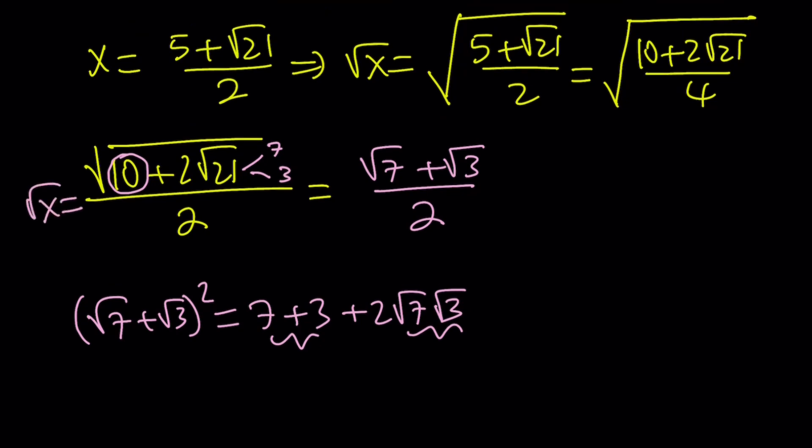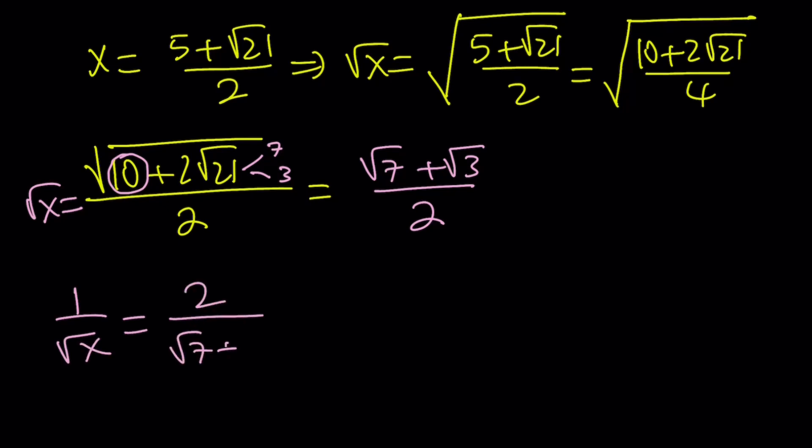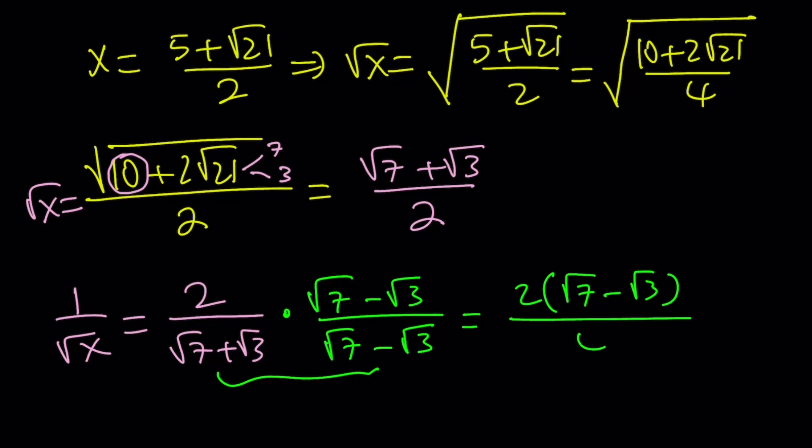So now I need to invert it, reciprocate it. Let's go ahead and find the reciprocal. If square root of x is that, then 1 over square root of x is obviously going to be 2 over root 7 plus root 3, but I got to rationalize the denominator. Multiply by root 7 minus root 3 over root 7 minus root 3. These are conjugates. When you multiply, you're going to get difference of two squares, which is 7 minus 3, which is 4. 2 goes into 4 two times, and we get root 7 minus root 3 over 2.